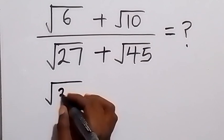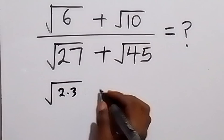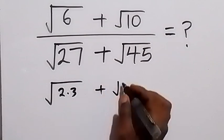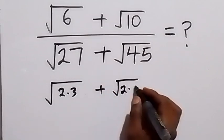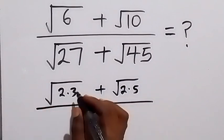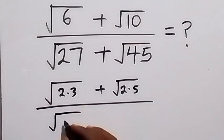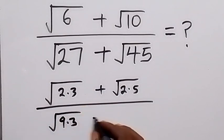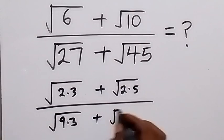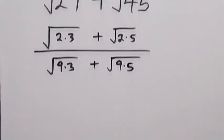From here we can write this as root 2 times 3, plus root 2 times 5, then divided by — we can write root 27 as root 9 times 3, and root 45 as root 9 times 5.